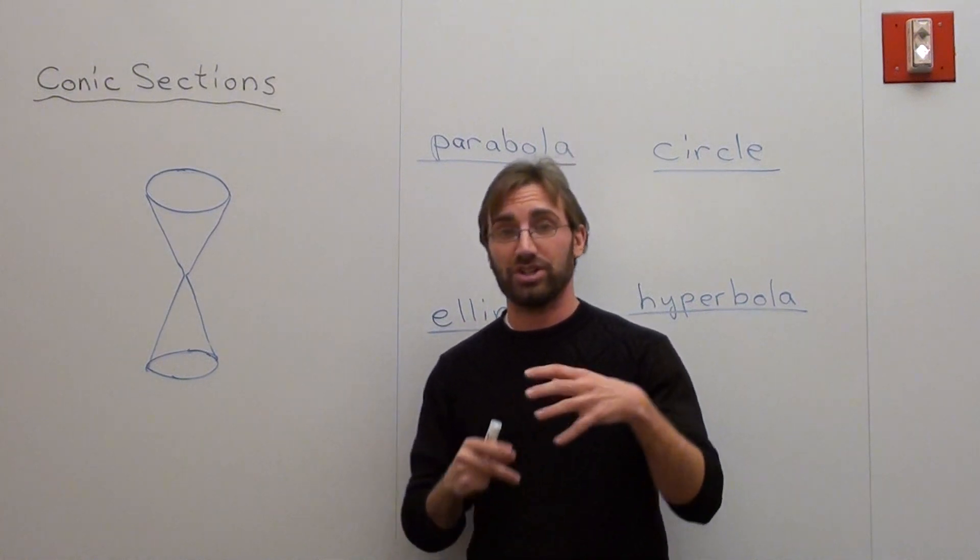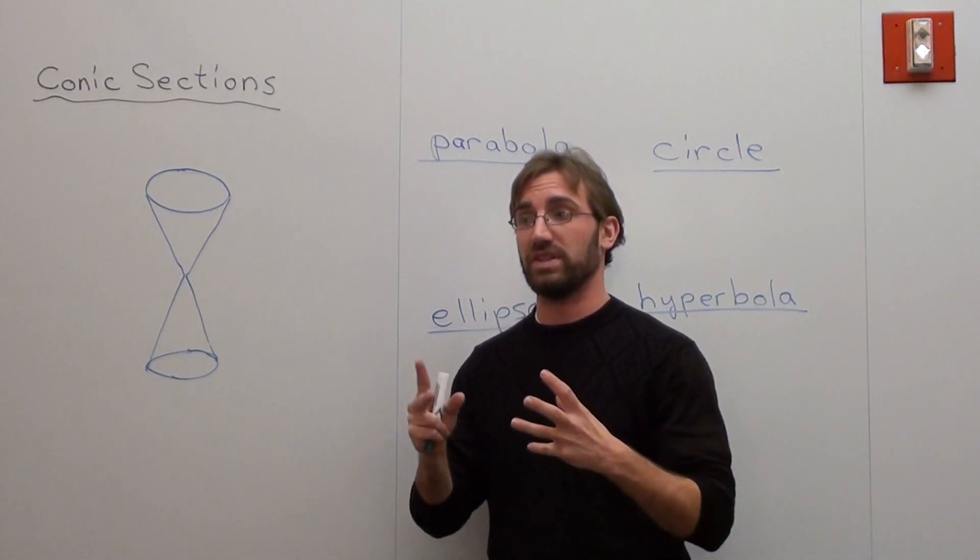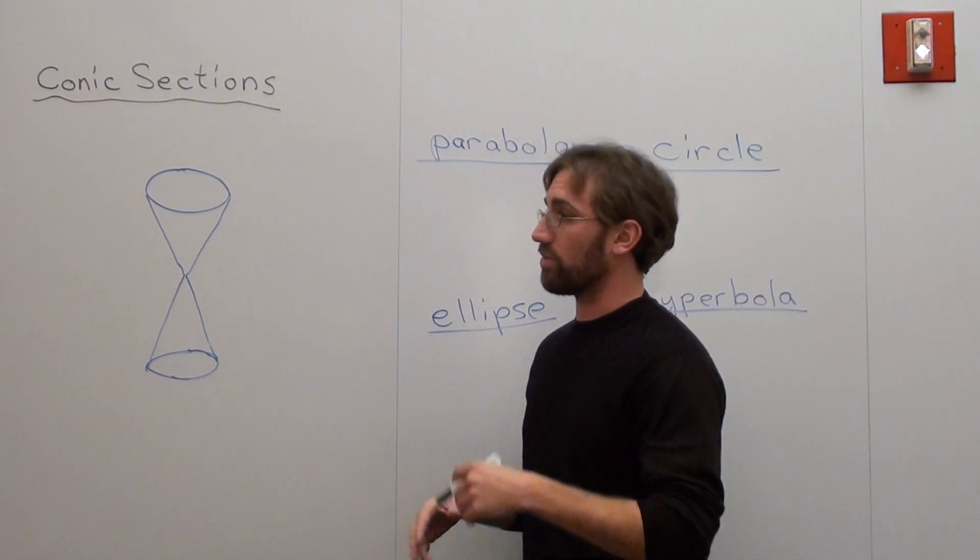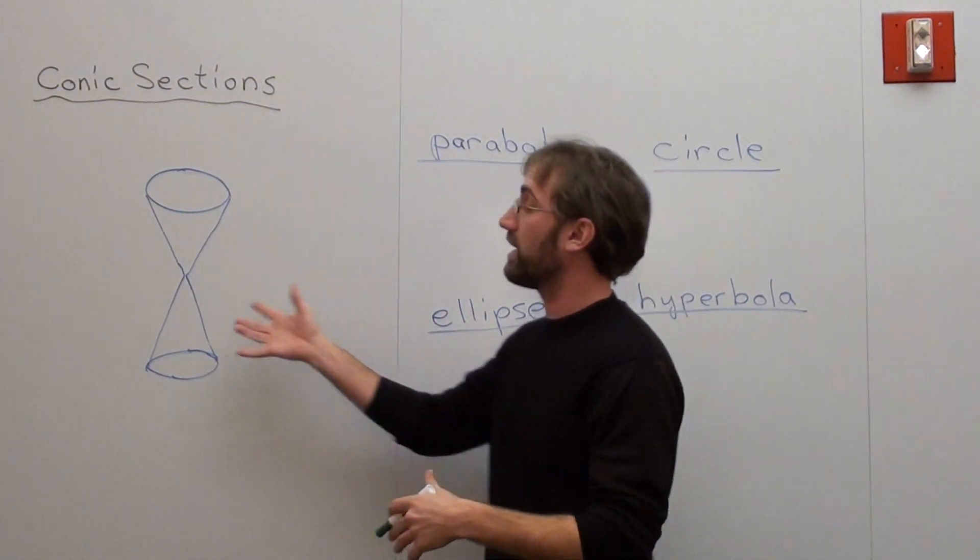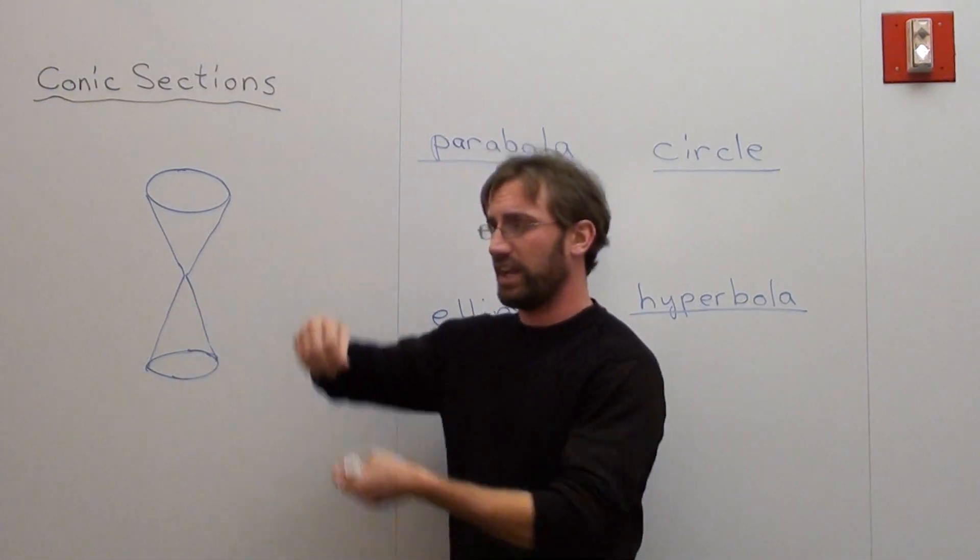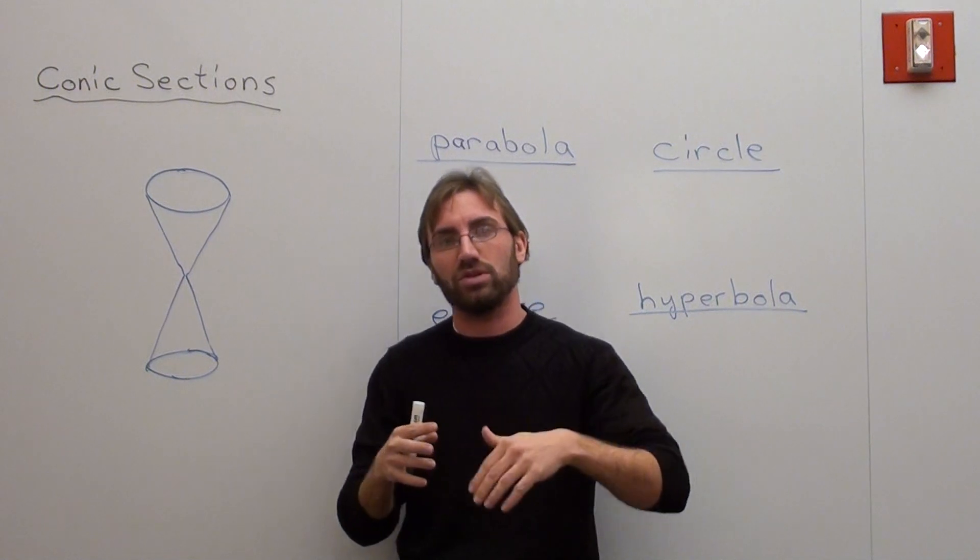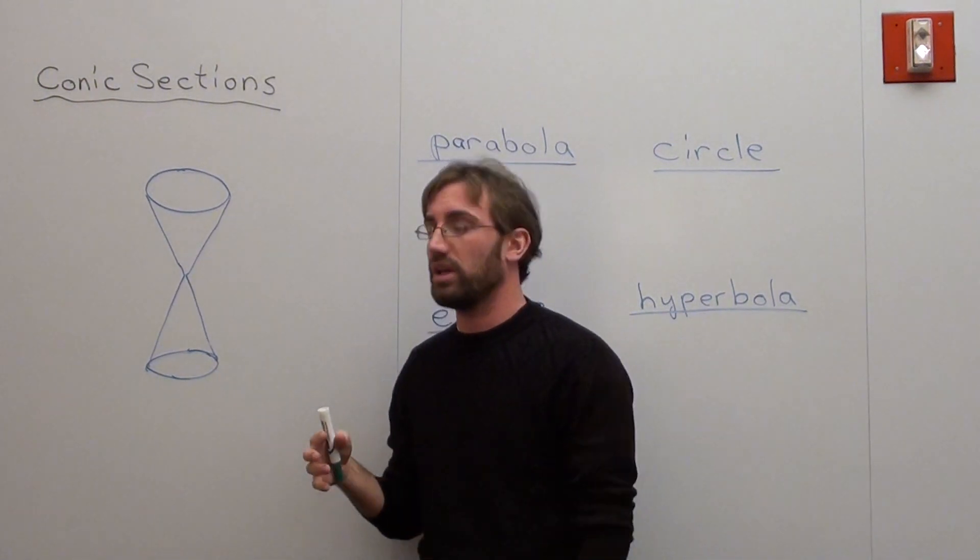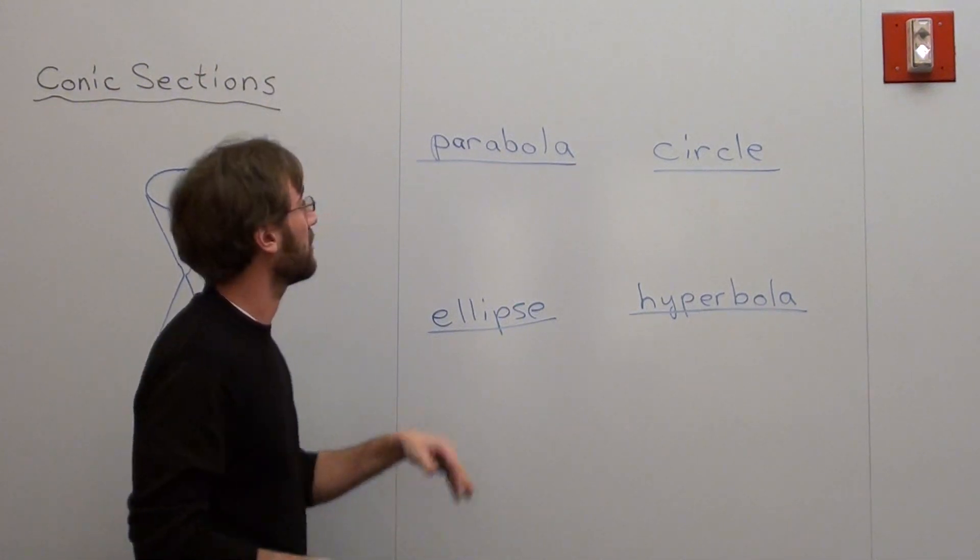Hello again. This is an introduction to conic sections. And what I basically need by conic sections are graphs that are created through manipulating this particular example here. This particular example that I have is two cones stacked on top of each one with the points. And what I can do if I slice through and what graphs I can create. There are four specific types of graphs that we study that we can create.